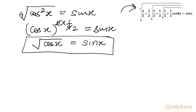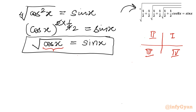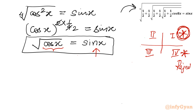Now a few important points regarding quadrant analysis. For the left-hand side — square root of cos x — to be real, cos x must be positive, which is true only in quadrants 1 and 4. However, in quadrant 4, sin x is negative, making the right-hand side negative while the left-hand side remains positive. So we accept only the 1st quadrant solution; the 4th quadrant is rejected.